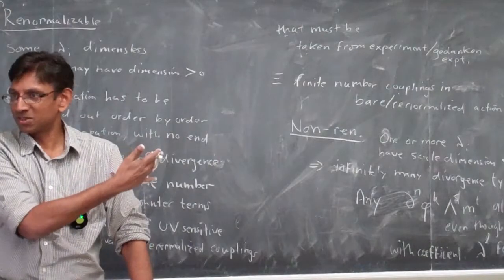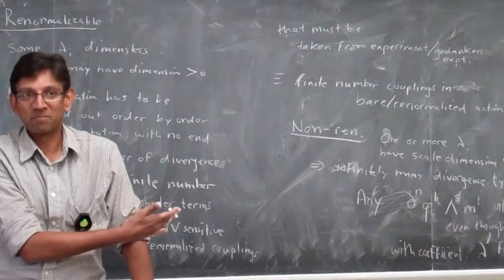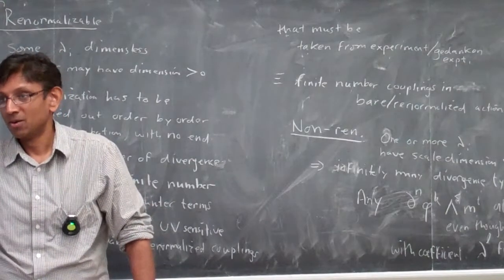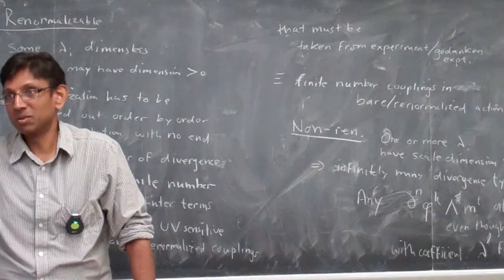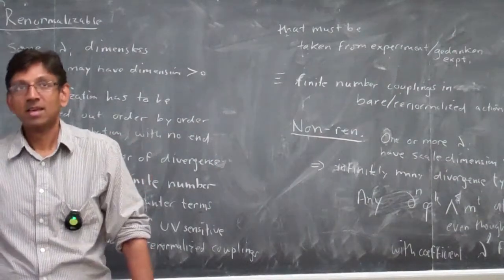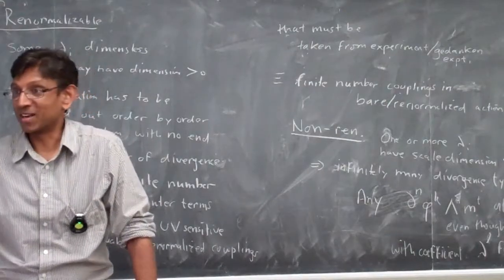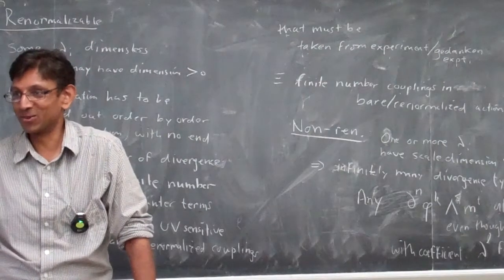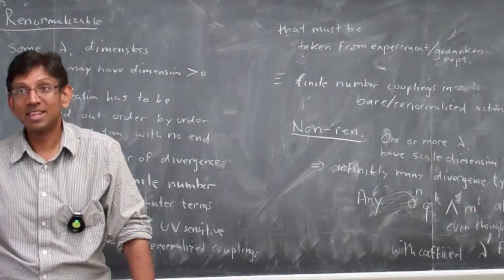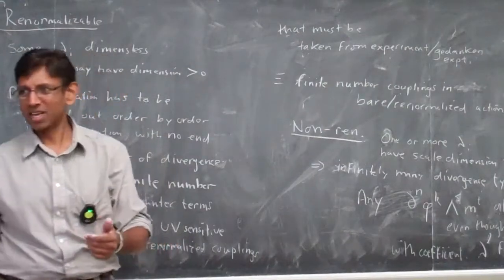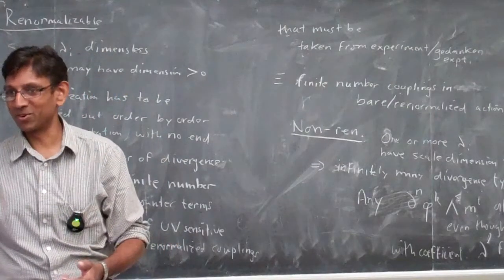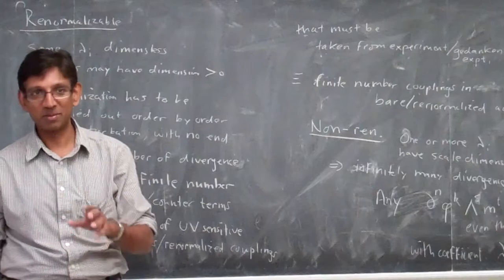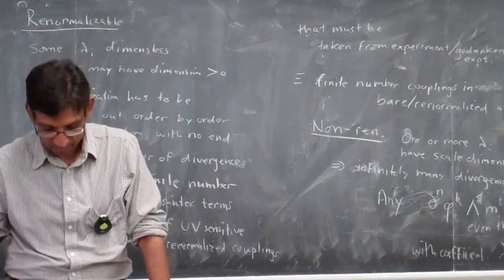We do have non-renormalizable theories where we work to reasonably high order and play this painful but incredibly predictive game. The classic case is the Chiral Lagrangian of pions, where the coupling constant has dimension like the weak interactions. The other classic case is the weak interactions themselves.